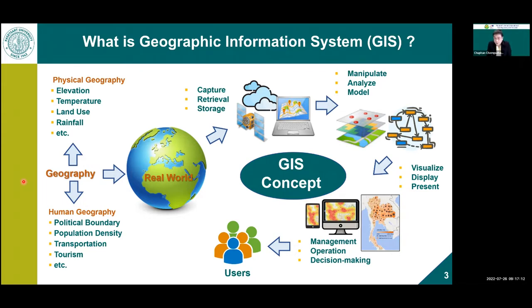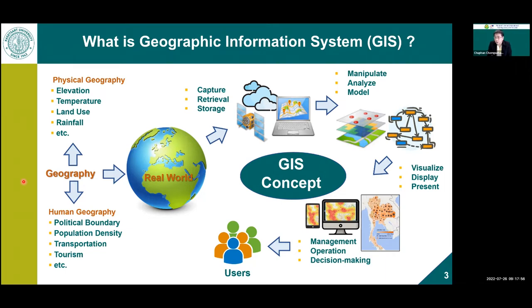When I teach my bachelor and master students the course in GIS and remote sensing, I always ask them first: what is a Geographic Information System, or GIS? The very easy concept is to just separate out the geography and the information system. Everybody knows what an information system is — computer systems, the internet, software, hardware. But the key point is the geography.